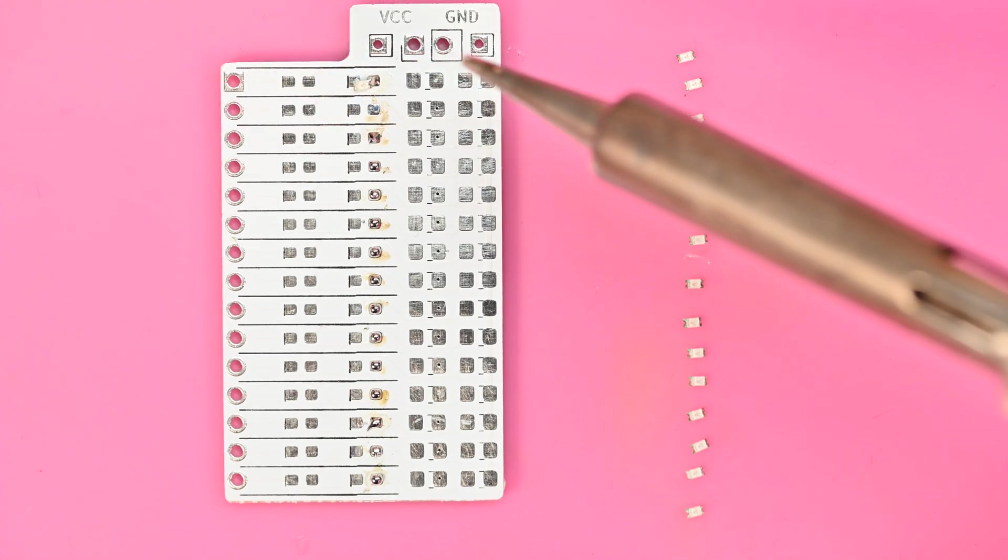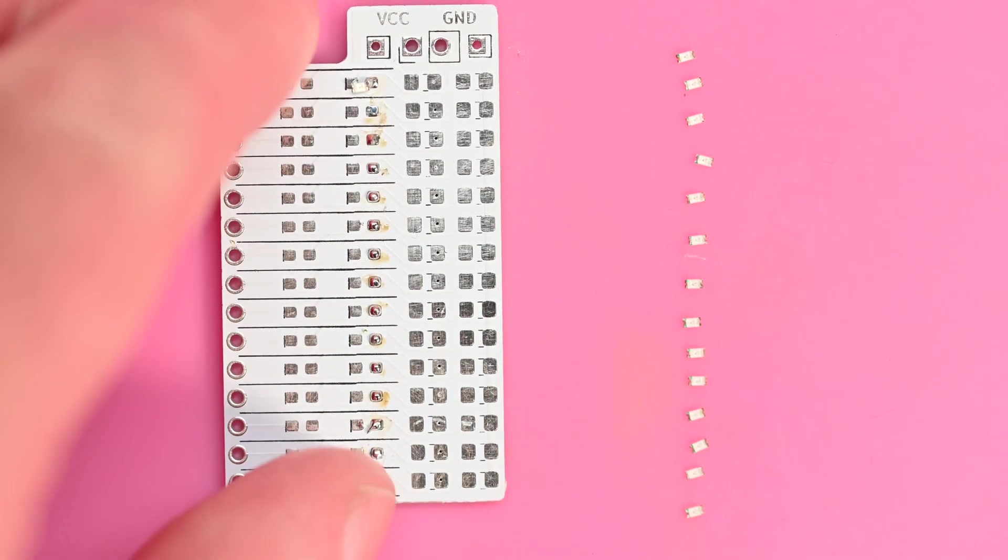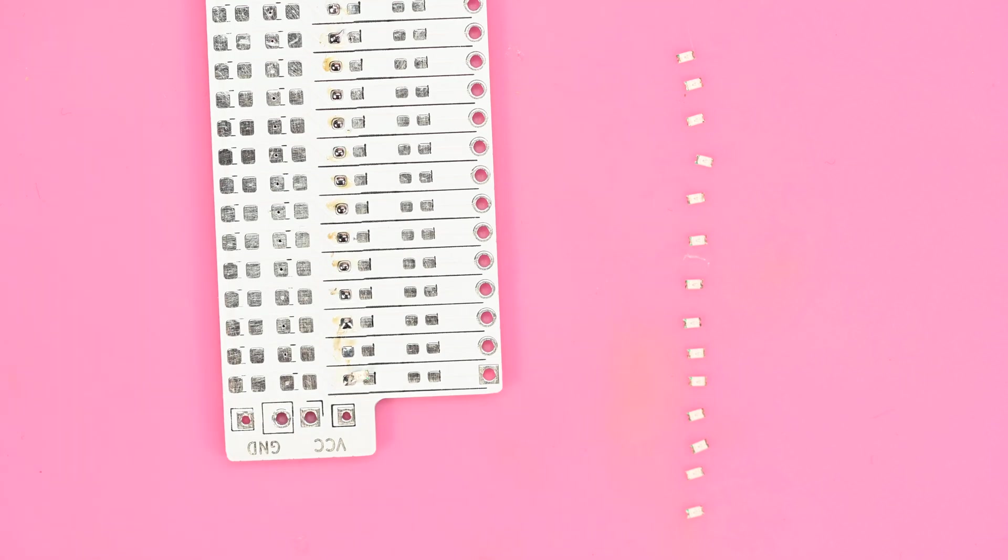So then I go and I solder one side in, make sure it's nice and flat, like so. And then once that is ready, then I will solder all of them down in this one row. And then I flip the board over and then I solder in the other end with a little bit of solder.